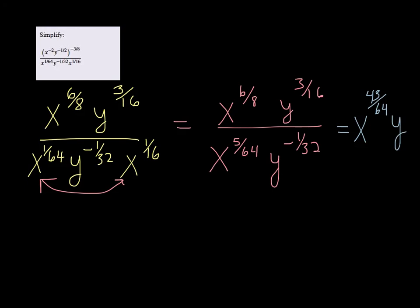And 3 sixteenths minus a negative 1 over 32 is 7 32s.